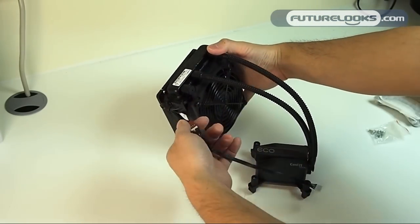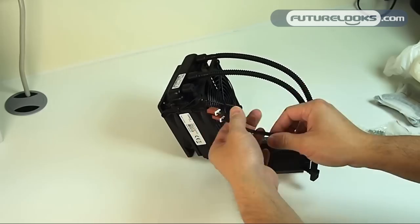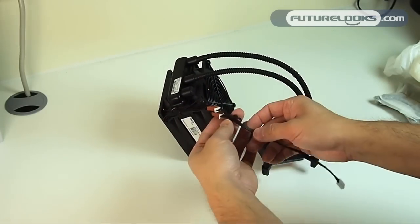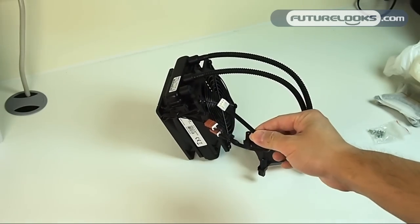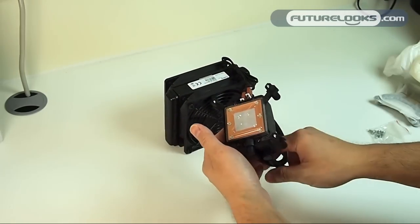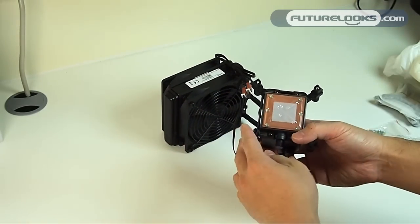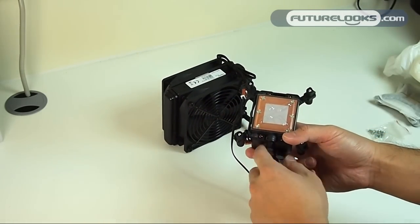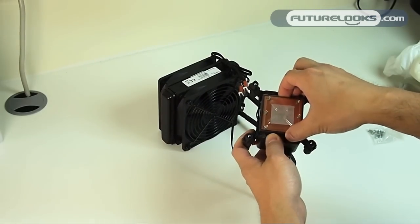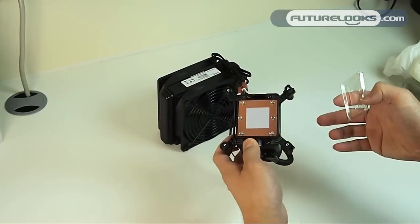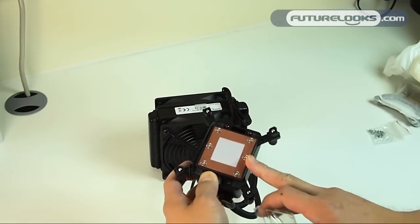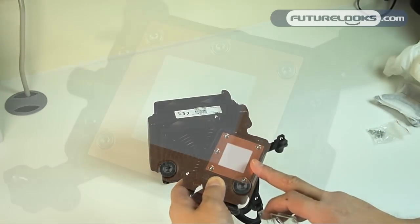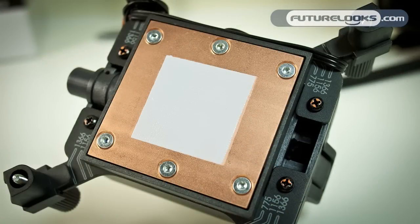You also get an additional fan splitter here that allows the two fans to join up and connect to one single fan header on your motherboard. And for those that haven't seen an Eco ALC unboxing here, one thing that you should be aware of is the fact that Coolit is one of few companies that actually gives you just the right amount of heat sink paste here. It's not slathered on. It's actually a very thin layer, which is the optimal way to install a CPU cooler.